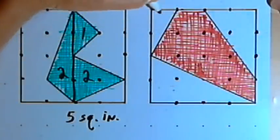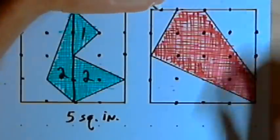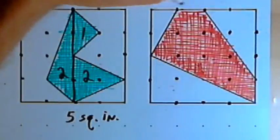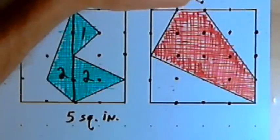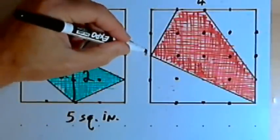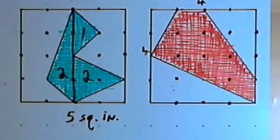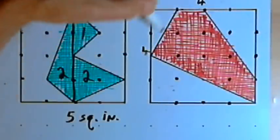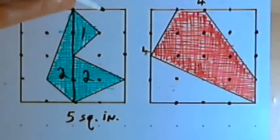For instance, this box has a width of 4 (1-2-3-4) and it's 1-2-3-4 units high, 4 inches high. So the area of this entire box is 16 square inches.